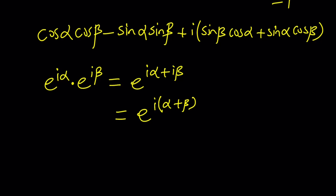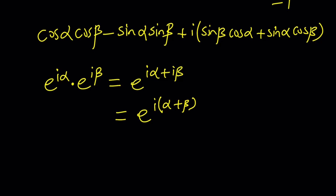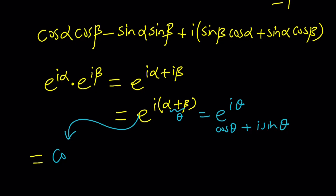So we have two formulas for the product. The exponential form isn't in standard form yet, so let's convert it. If I call alpha plus beta theta, then E to the I theta is cosine theta plus I sine theta, and theta is alpha plus beta. So this becomes cosine of alpha plus beta plus I times sine of alpha plus beta.